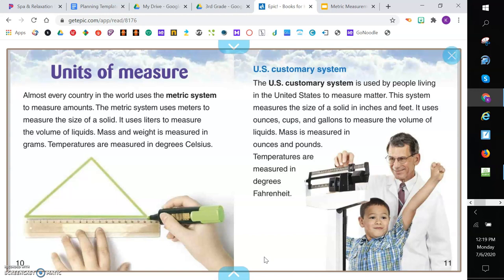U.S. customary system. The U.S. customary system is used by people living in the United States to measure matter. This system measures the size of a solid in inches and feet. It uses ounces, cups, and gallons to measure the volume of liquids. Mass is measured in ounces and pounds. And temperatures are measured in degrees Fahrenheit.